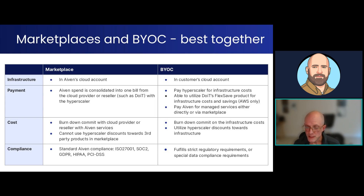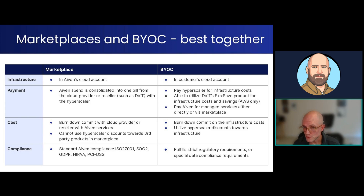Around cost efficiency: even within Marketplace, you have the capability to burn down those commits with your cloud provider or reseller for the cost of Ivan services. Additionally, with BYOC, compounding these initiatives together, you then get to burn down costs for infrastructure. One important note is you're not able to obtain hyperscaler discounts towards third-party products in Marketplace; however, you can use hyperscaler discounts towards your existing infrastructure. And for compliance, we have standard Ivan compliance that stays intact, but if you have additional or stricter governance requirements, those can be fulfilled much easier in the BYOC model.